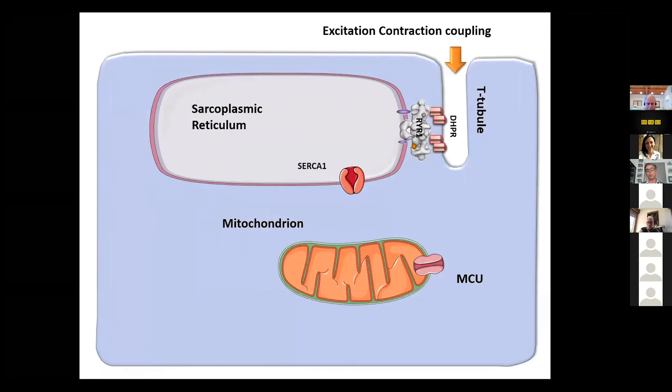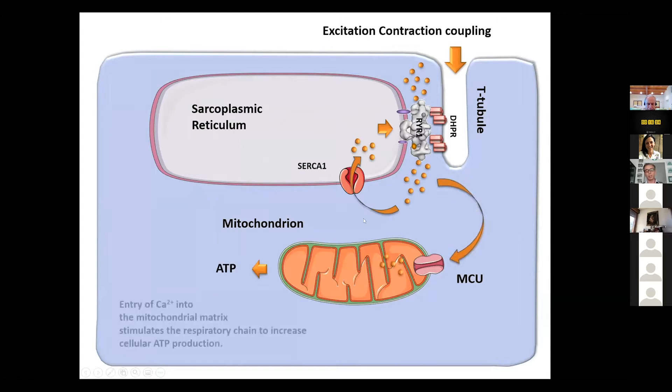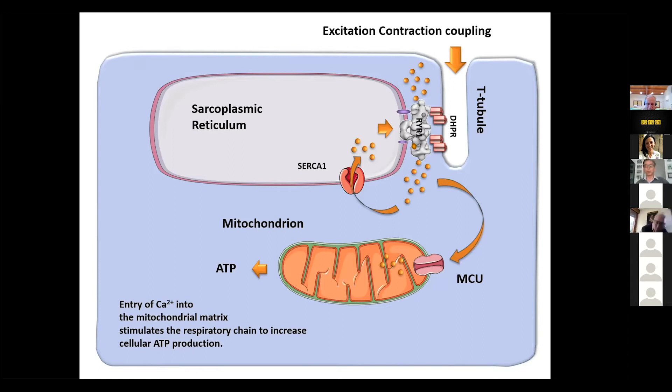During EC coupling, calcium is released from the sarcoplasmic reticulum via the ryanodine receptors. Then to allow skeletal muscle relaxation, the calcium is taken away from the cytoplasm. But a little amount of calcium enters the mitochondria, and this is important to stimulate aerobic ATP production by these organelles. But in all this, there is a paradox. If we take mitochondria out of muscle and try to expose them to calcium, you need a very high concentration of calcium, about 30 micromolar, to get calcium into these organelles. This is not the concentration that is reached by calcium during EC coupling.